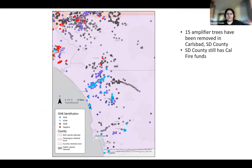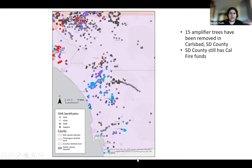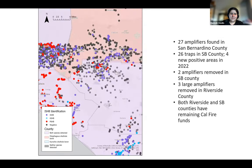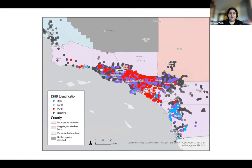Moving south to San Diego County, the eastern portion is the leading edge down south, and they are also seeing an expanding and entrenchment of ISHB. The main thing to take away from all of this is: don't panic. We know how to manage ISHB fairly well, and if you spot it early and have a really good plan — early detection and rapid response — you don't have to panic. But you do want to pay attention to this problem.